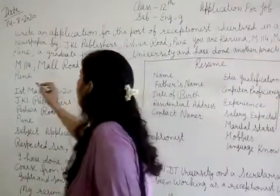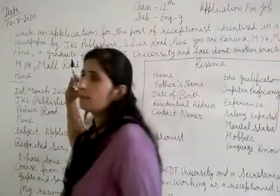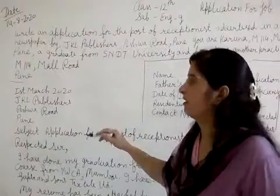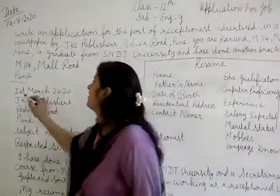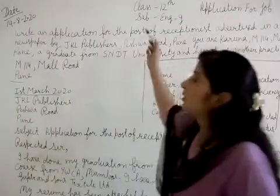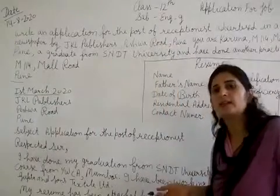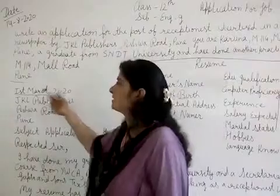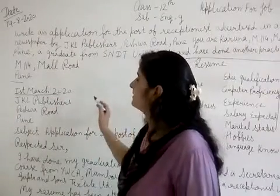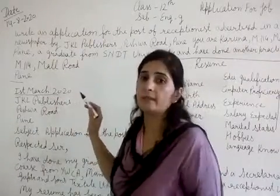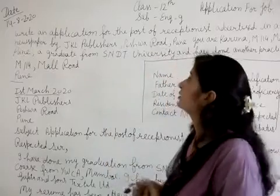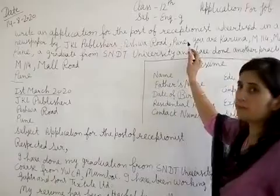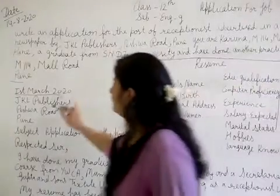After this, you have to skip one line and mention the date. You can mention the date — if it is not mentioned in the topic, you can write any date. For example: 1st March 2020. After this, write the address of whom you are writing the letter to. Which person are you writing the letter to? J.K.L. Publishers, Peshawar. This is also mentioned in the topic, so write it here.